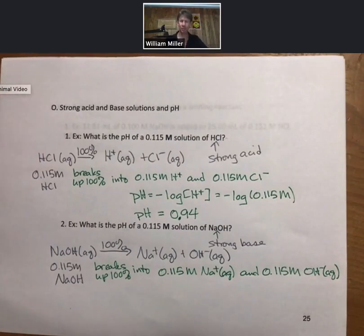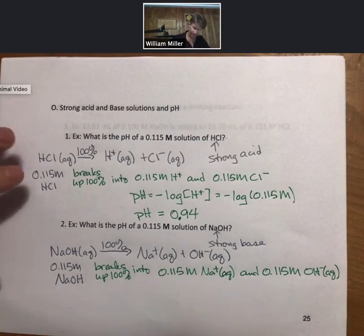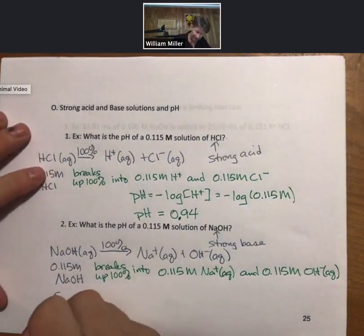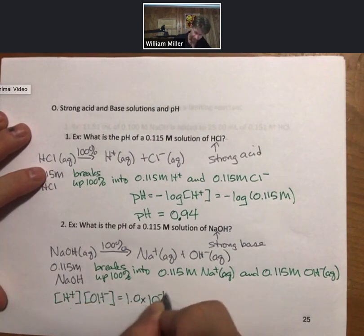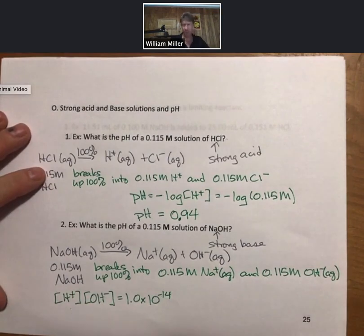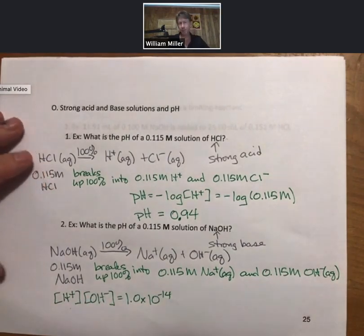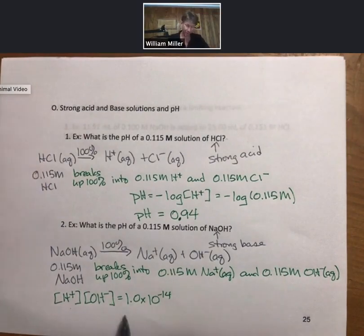We don't have the concentration of H+. There are two ways to find it. One is you can use this equation. Hydrogen ion times hydroxide ion concentrations equals 1.0 times 10 to the minus 14. I'm going to use this, and that always works.